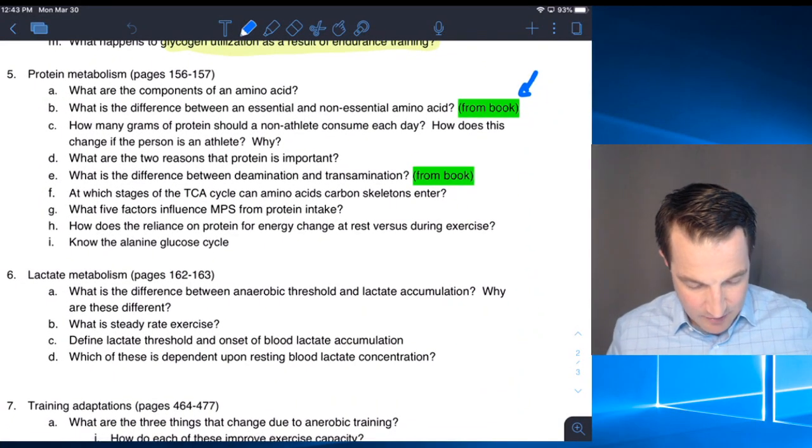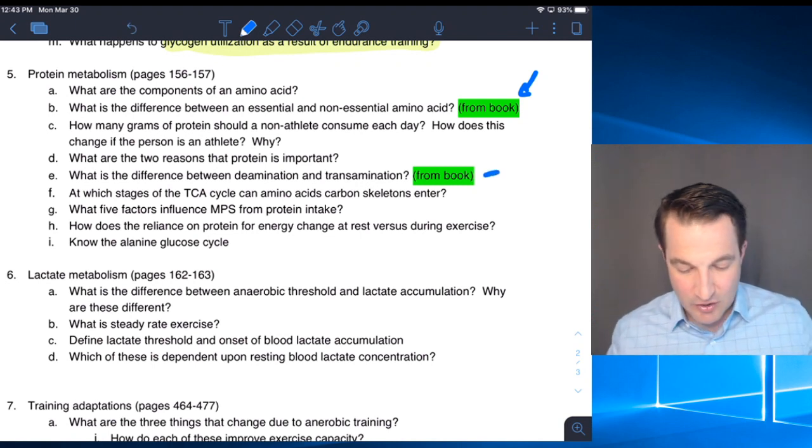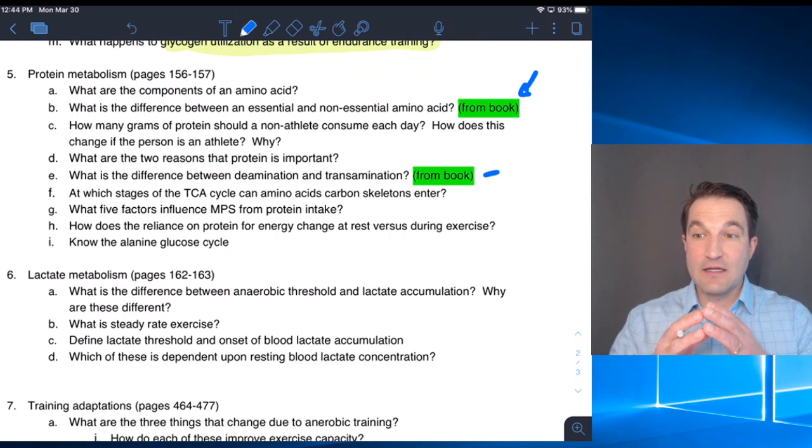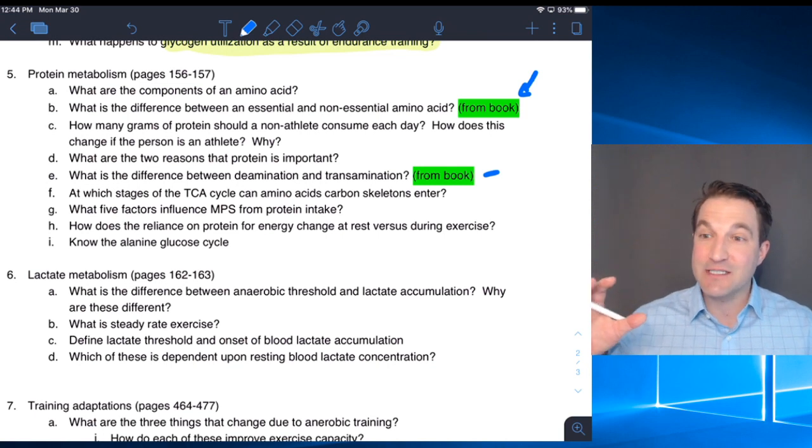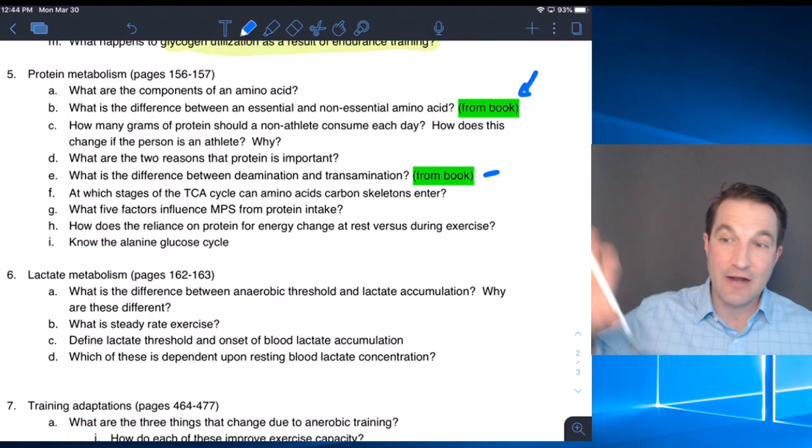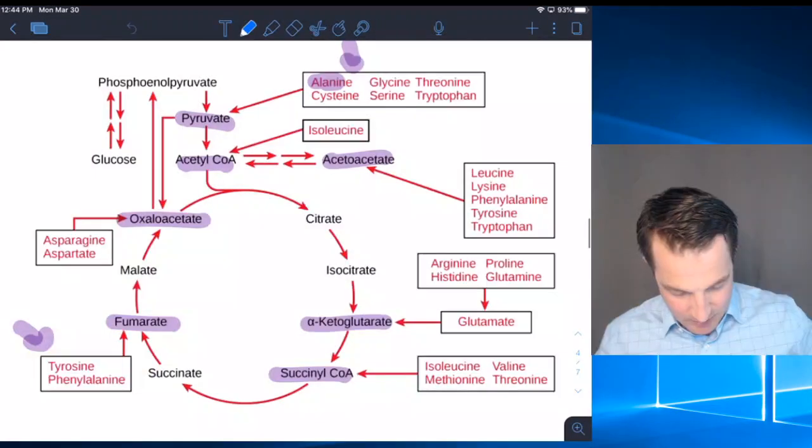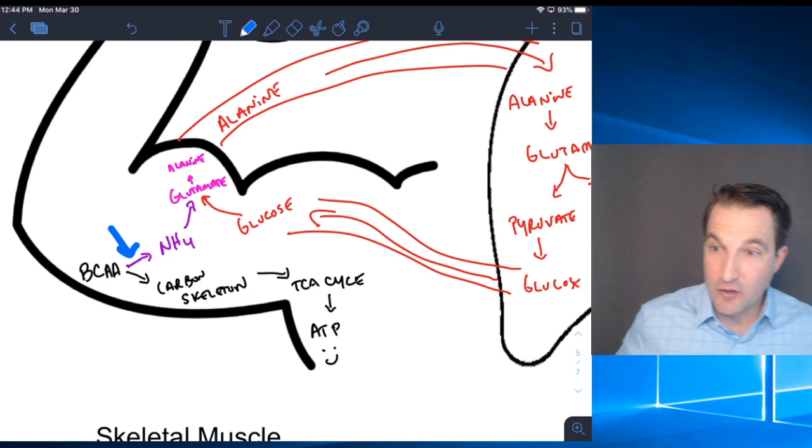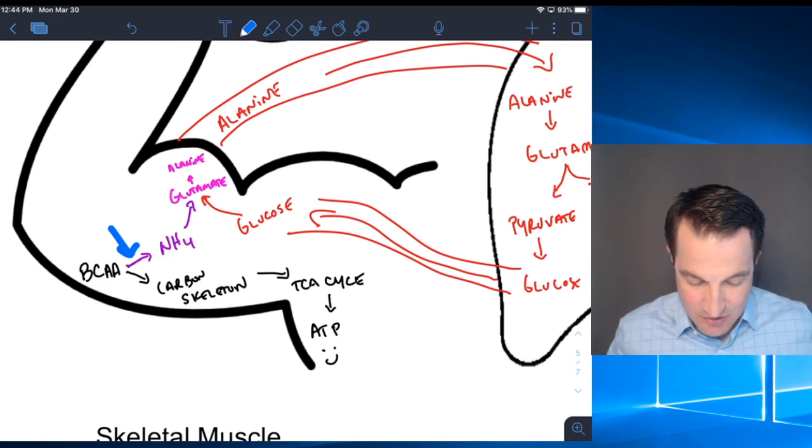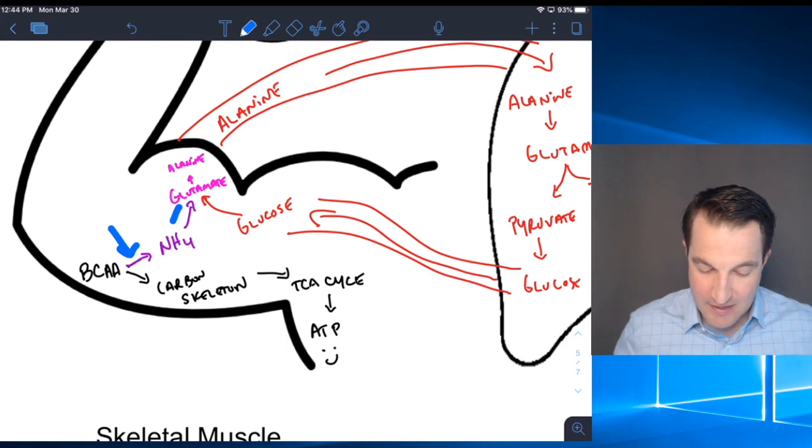Transamination and deamination: Deamination is taking that nitrogen off, taking the amine group off. That's what happens during our glucose-alanine cycle. Transamination is moving that nitrogen. When we are removing nitrogen, we are completing our deamination. We are transaminating it when we are moving it on and combining it with glucose to make our glutamine, changing location.